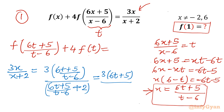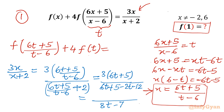In the denominator, after taking LCM, we write 6t + 5 + 2(t - 6) = 6t + 5 + 2t - 12 = 8t - 7. So the RHS simplifies to 3(6t+5)/(8t-7).